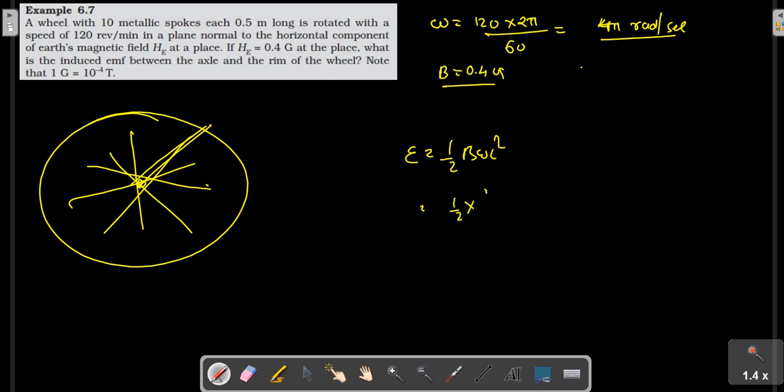B is given as 0.4 gauss in Tesla, omega is 4π, l is 0.5 meters. Simplifying...